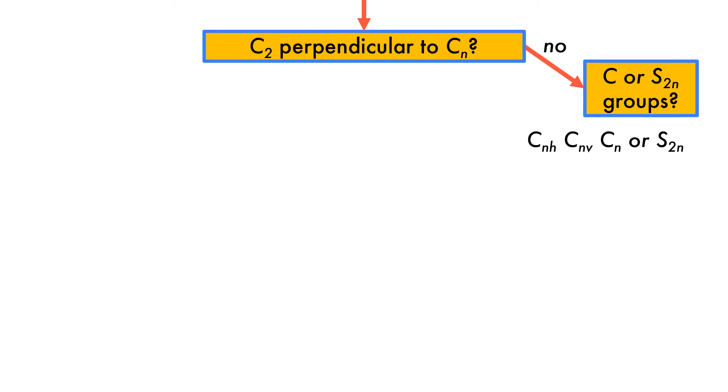If there is no C2 rotational axis perpendicular to the principal axis, then we have the C or S2N groups. The first, CNH, is similar to DnH, but without a vertical mirror plane. Here it is represented by trans-1,2-dichloroethane.